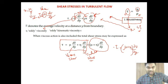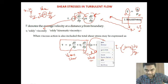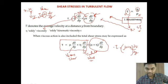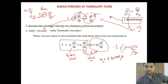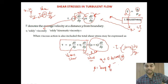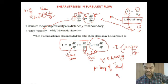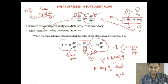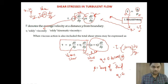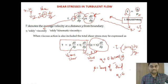The eddy viscosity η may vary from 0 to 1000 times that of μ. Whereas μ is only dependent upon the temperature of the fluid, η and ε₀ depend upon the flow properties of the fluid. This expression of total shear stress is given by J. Boussinesq. However, since ε₀ and η vary and cannot be determined easily, this equation has limited use.